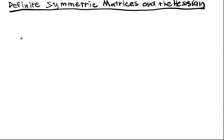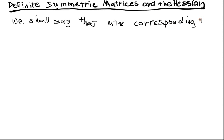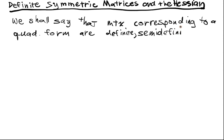Since we can identify a quadratic form with a symmetric matrix, we're going to define definiteness in terms of matrices themselves. We shall say that the matrix corresponding to quadratic forms are definite, semi-definite, or indefinite.